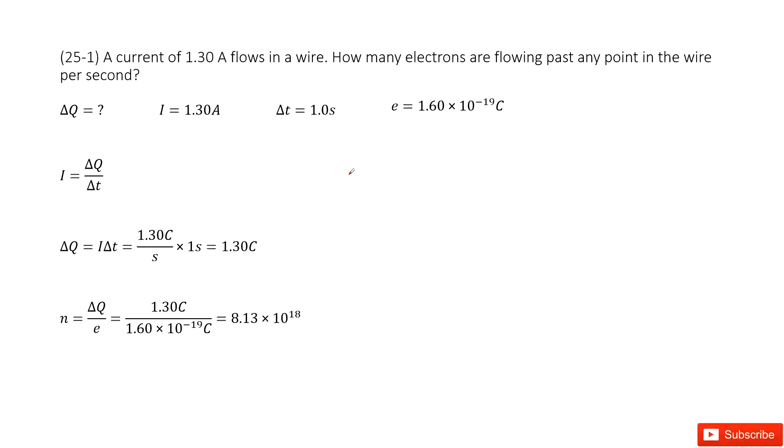Chapter 25 is about electric circuits and resistance. We have a current I given at 1.30 amperes, and it flows in a wire.